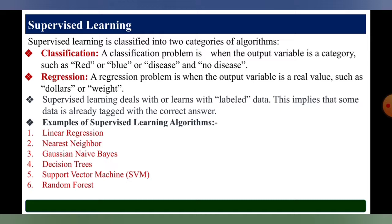The following are supervised examples of algorithms: the first one is linear regression, second one is nearest neighbor, third one is Gaussian Naive Bayes, fourth one is decision tree, fifth one is support vector machine, and sixth one is random forest.